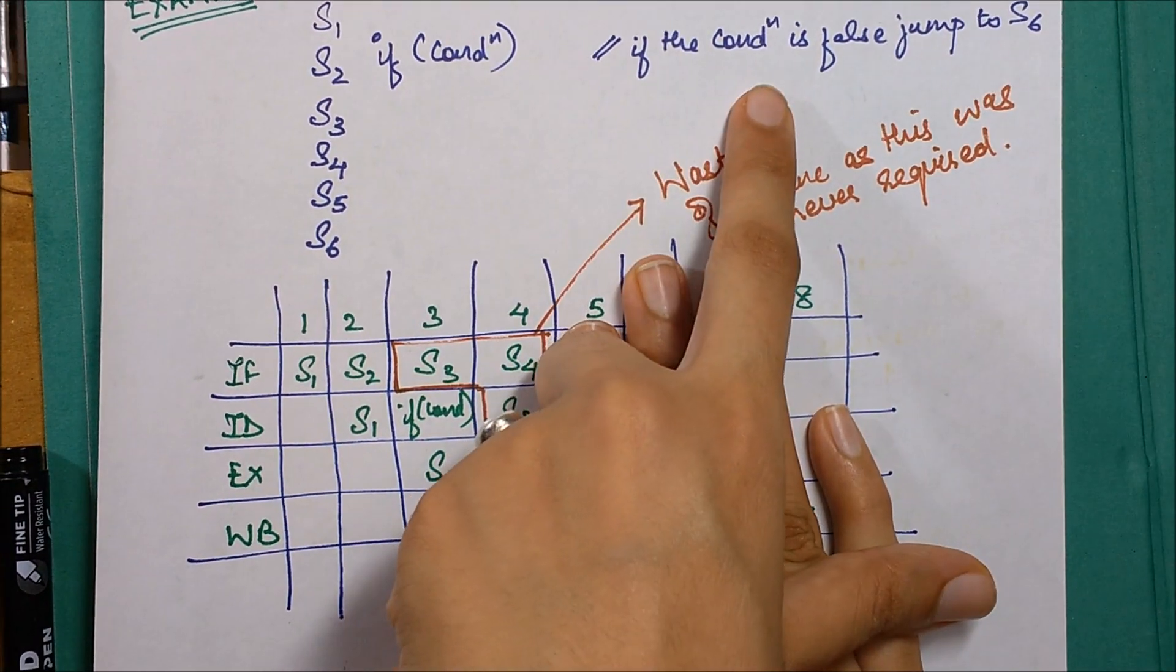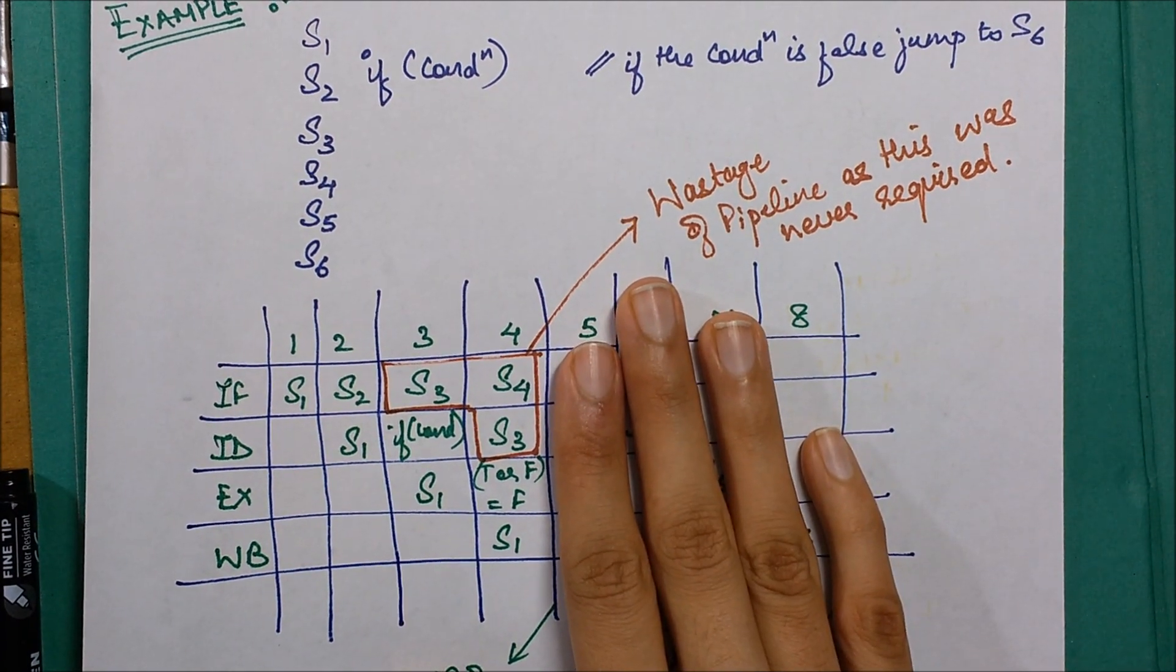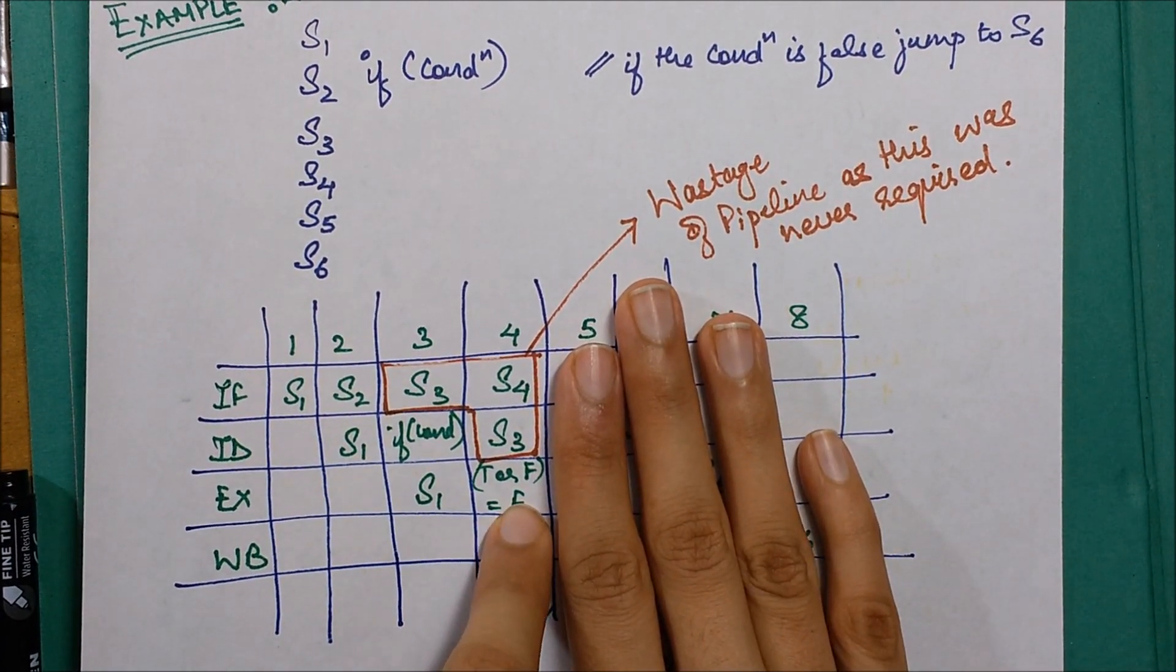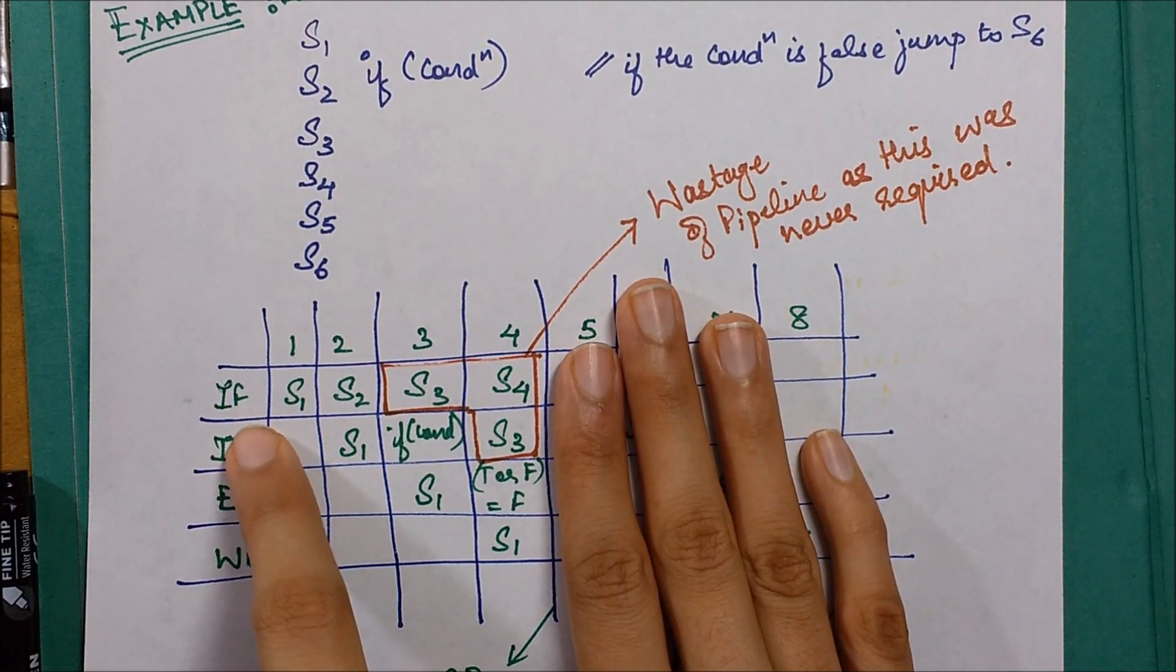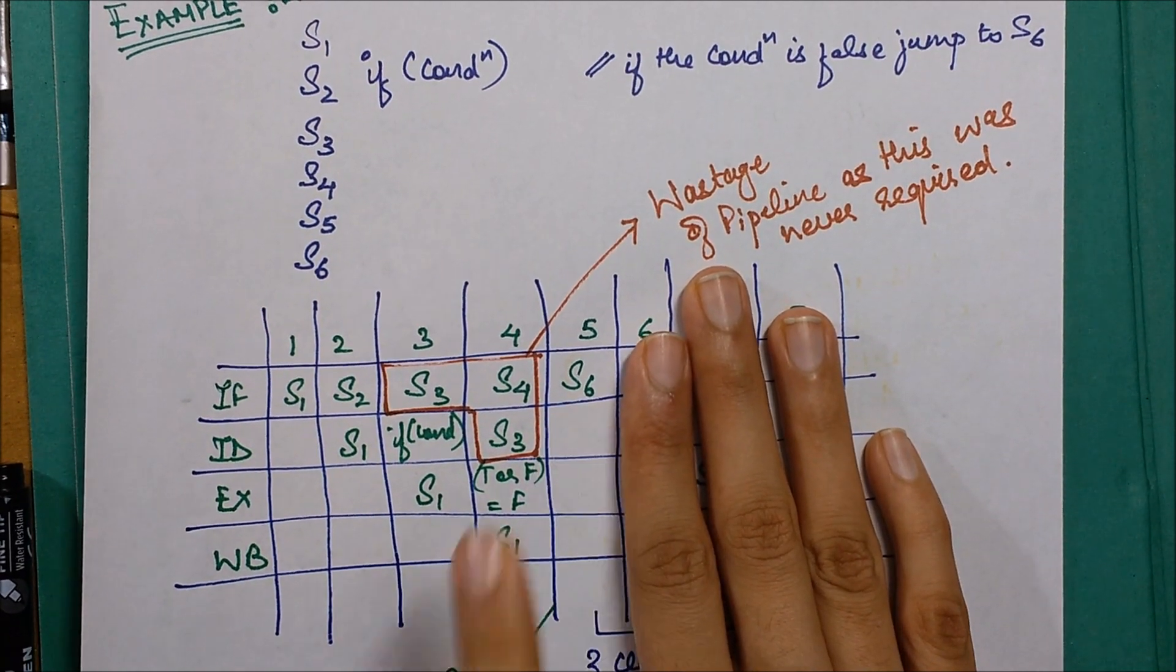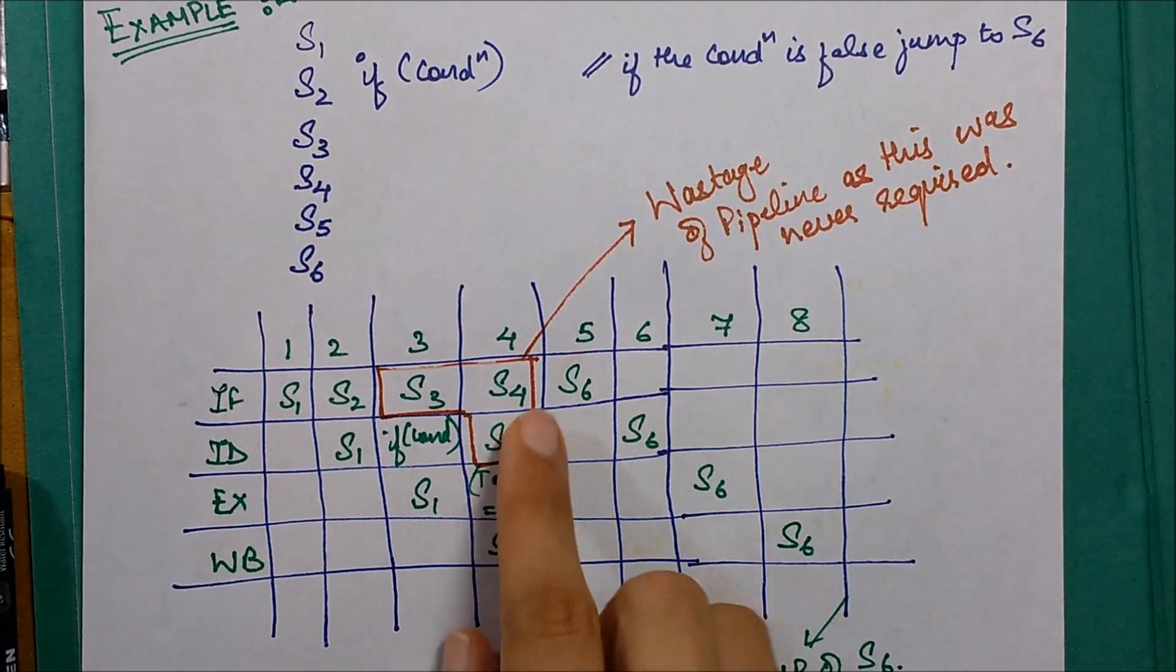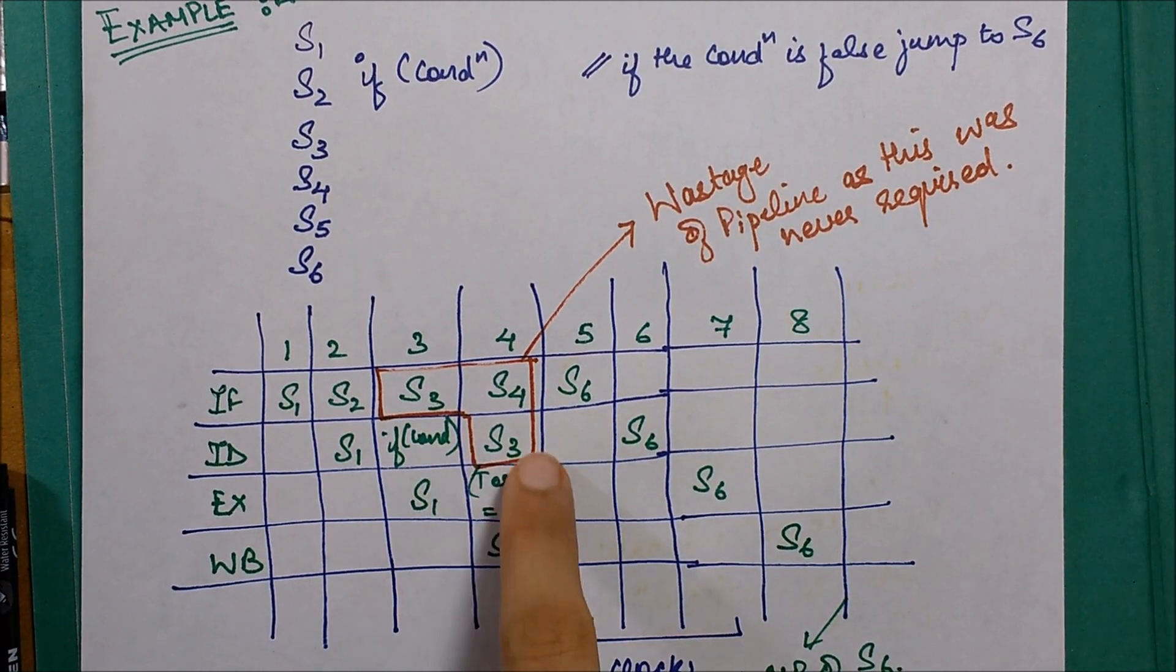That means we now directly have to move to S6. We have to move to the instruction fetch case of S6, so we start with the execution of S6. Now the problem over here marked in red is there was no use of executing these instructions. This is essentially a wastage of resources.